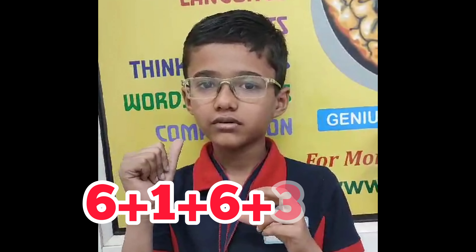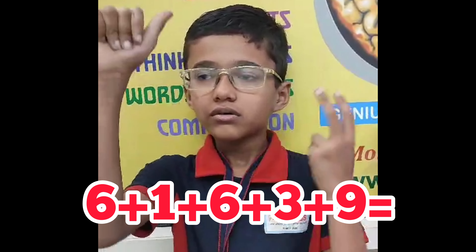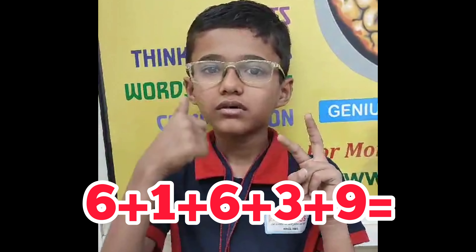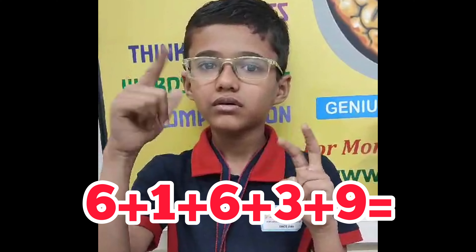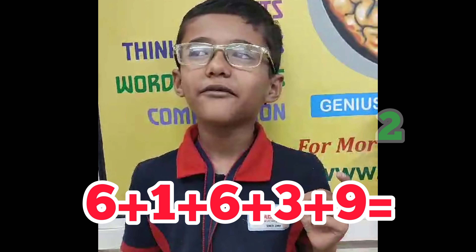One digit 5 row. 6, 1, 6, 3, 9. That is 25.